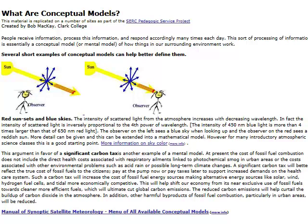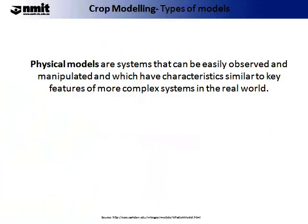On this web page you will find some examples of what conceptual models are. Please familiarise yourself with the red sunset and blue skies model, and the significant carbon taxes example of a mental model. A physical model is a system that can be easily observed and manipulated, and which has characteristics similar to key features of more complex systems in the real world.